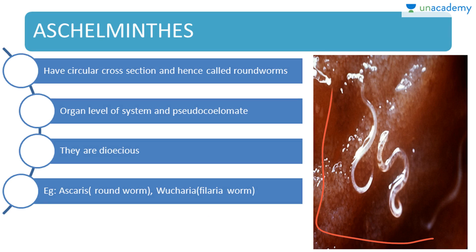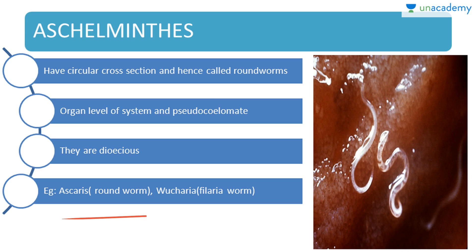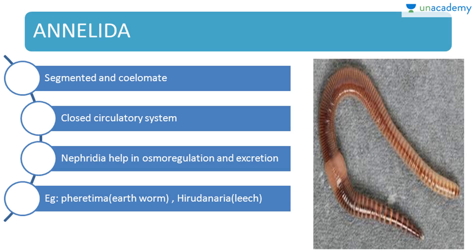Next is Aschelminthes — they have a circular cross-section and are hence called roundworms. They have organ system level of organization and are pseudocoelomates. They are dioecious, meaning sexes are separate. Examples: Ascaris (the roundworm) and Wuchereria (the filaria worm).